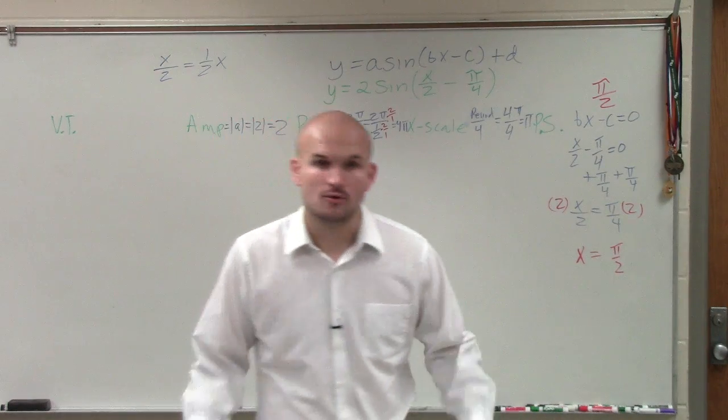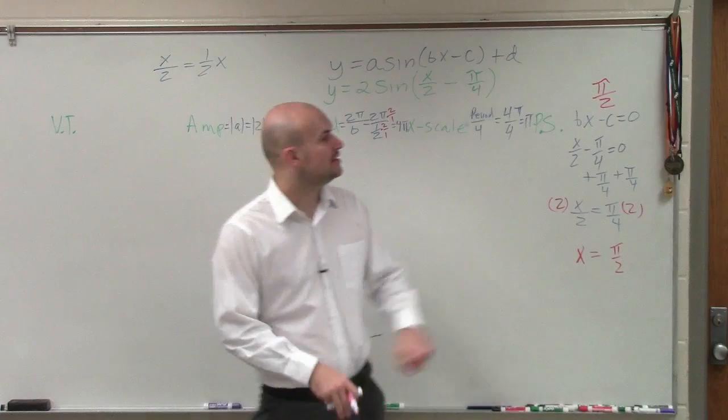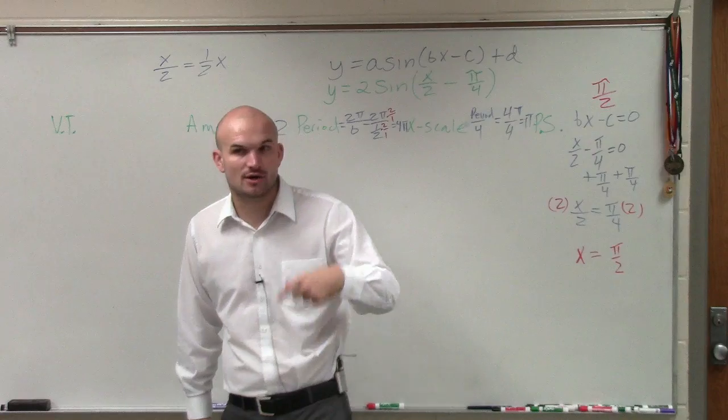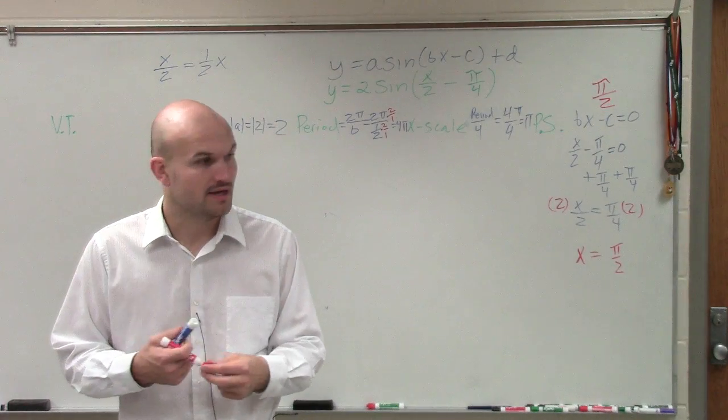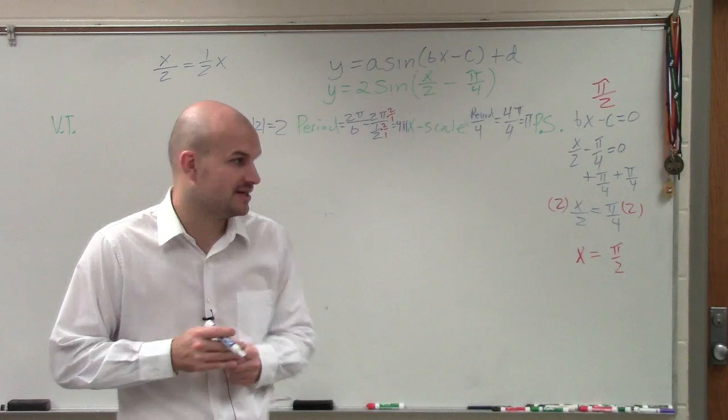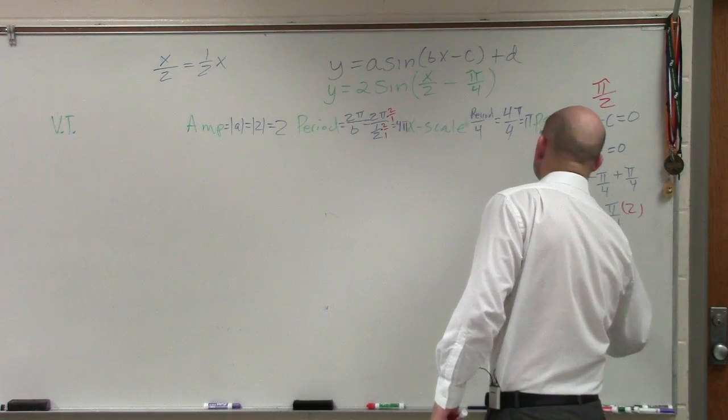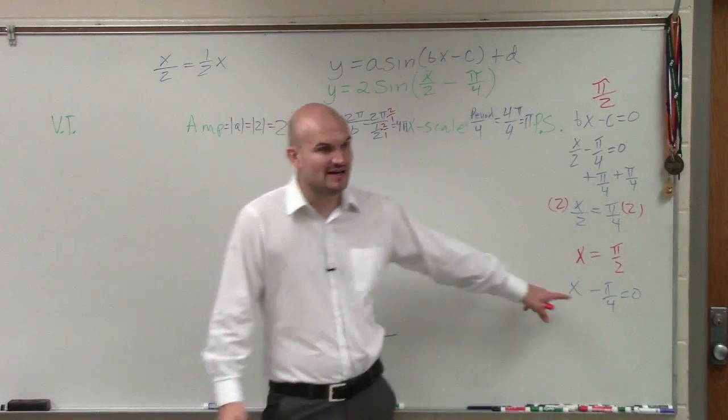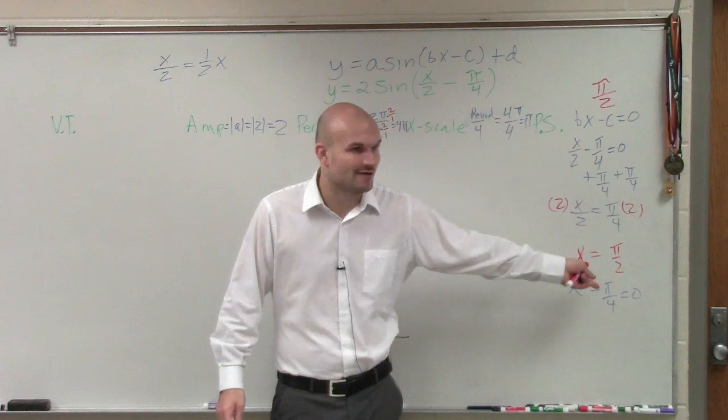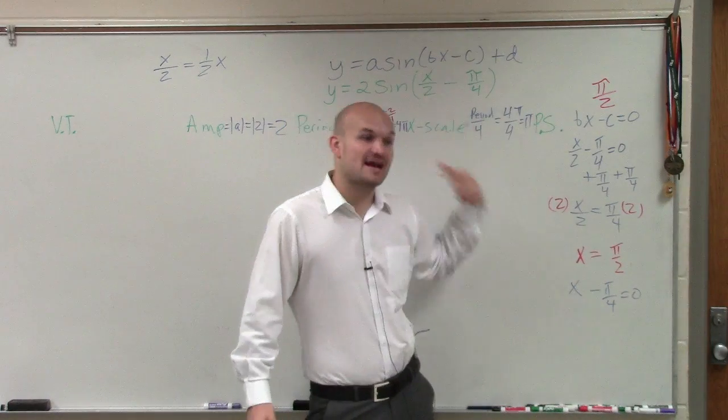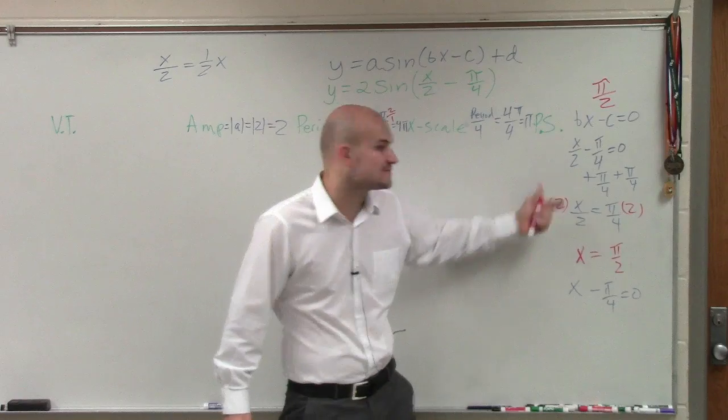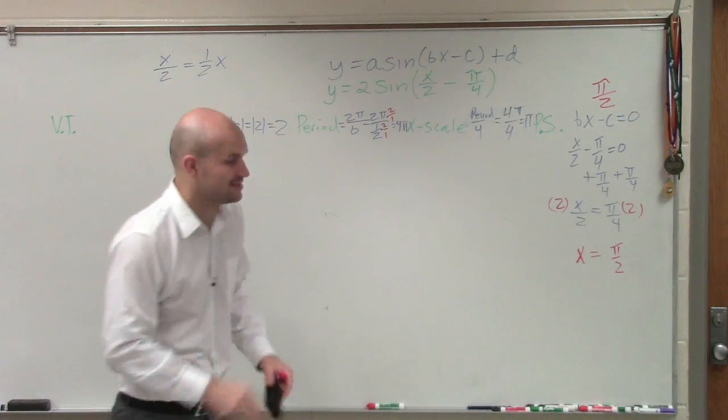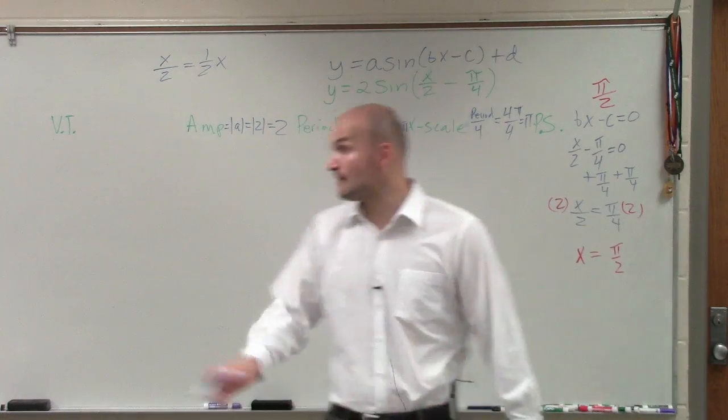So my phase shift, ladies and gentlemen, is actually π halves. It's not π over 4. It's π halves. A lot of students make this mistake. When you guys are doing your phase shift, make sure you always take, include your b if there is one—bx minus c, set it equal to 0, and that's how you find your phase shift. If there's no b, your phase shift would just be this. But when you have a b, since that affects your period, it affects your phase shift.